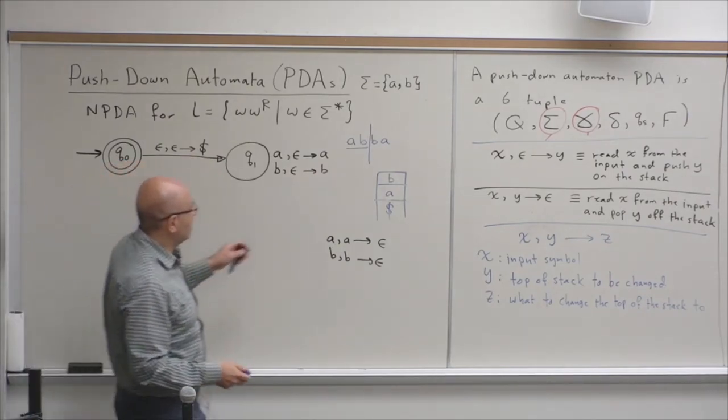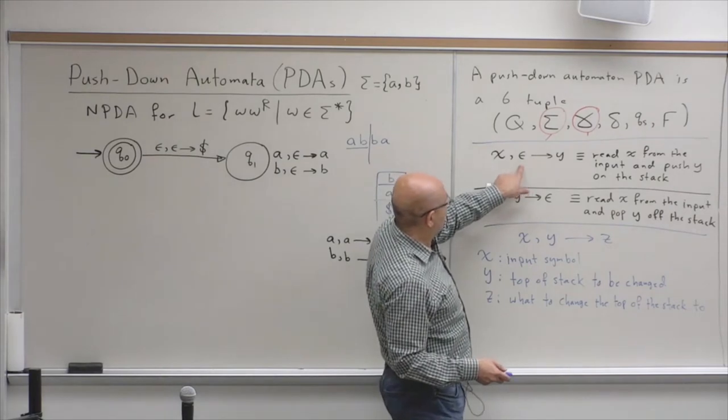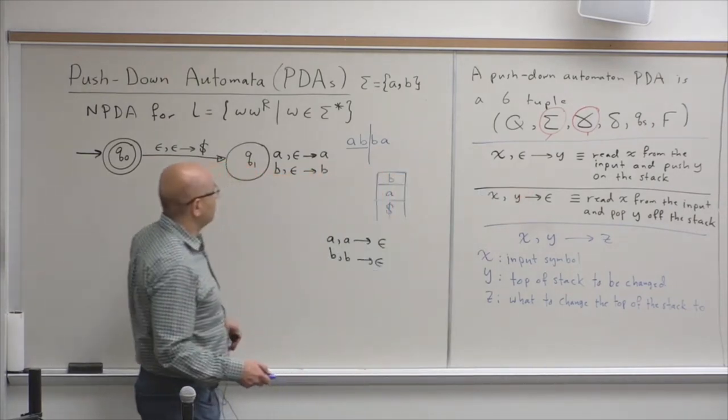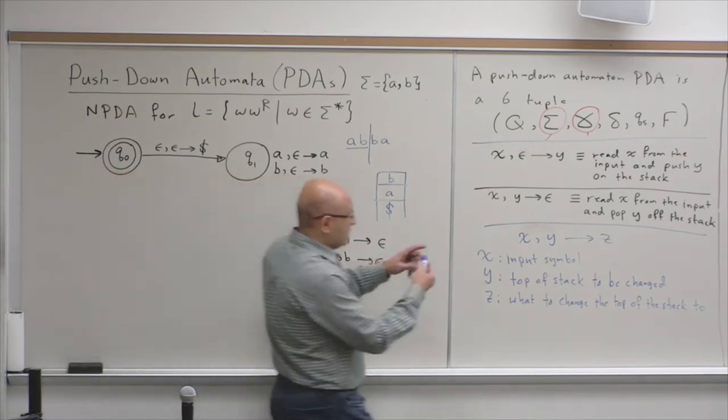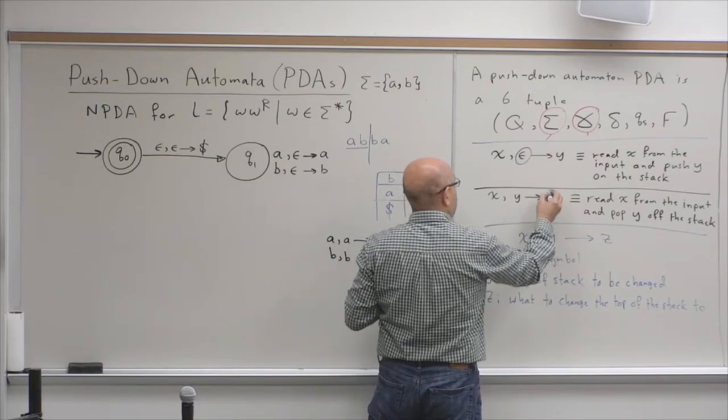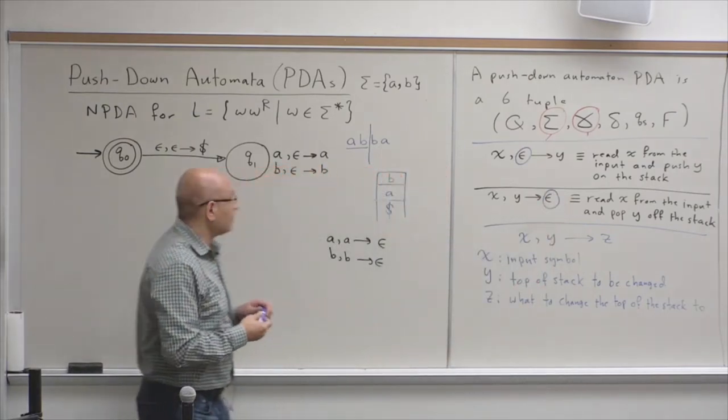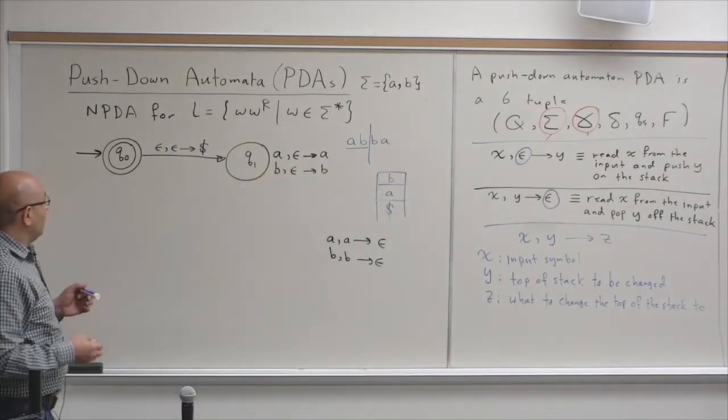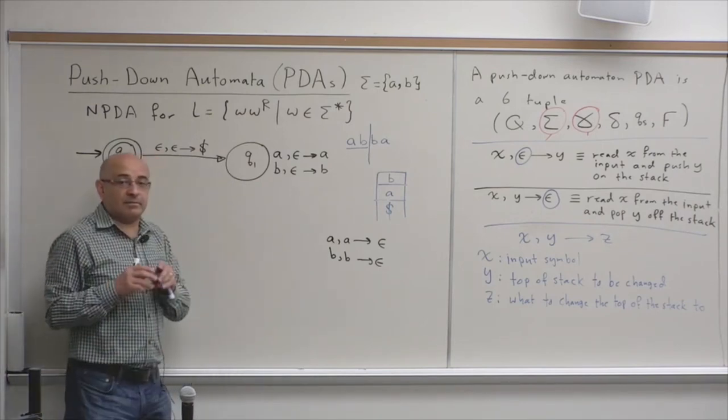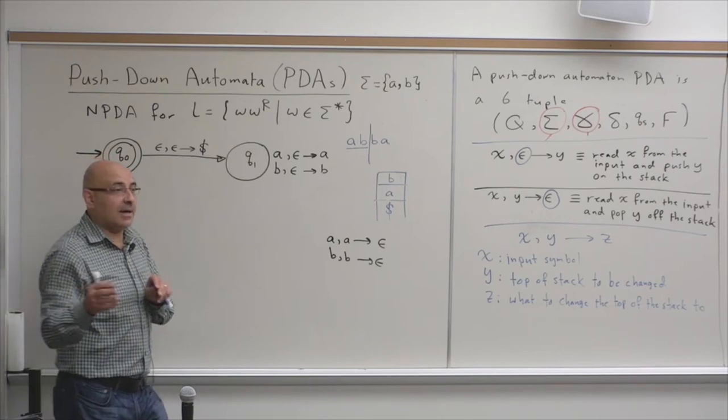Remember this thing? Read X from the input and push Y. So, when you have this epsilon, this is a push. When you have Y goes to epsilon, this is a pop. Now, how do I know when to switch to the popping mode?